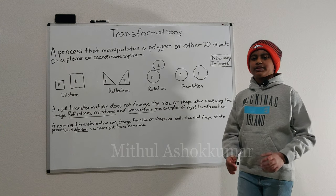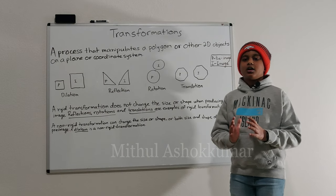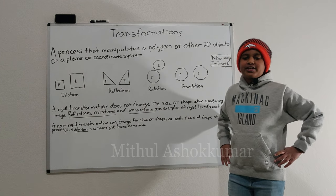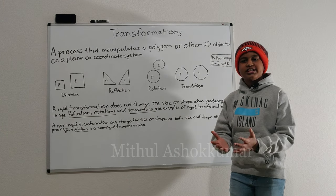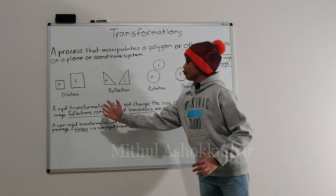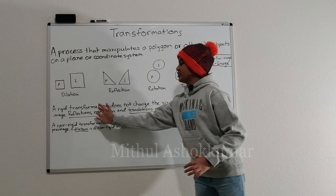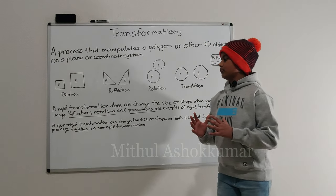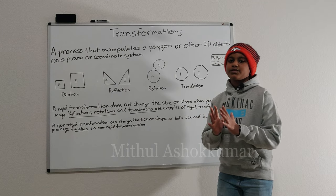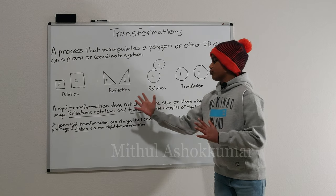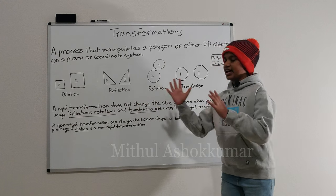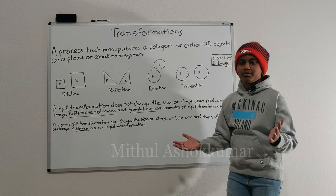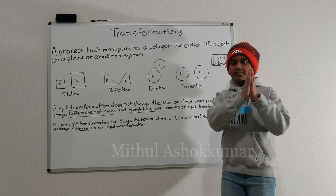There are two types of transformations in Math. They are rigid transformations and non-rigid transformations. A rigid transformation does not change the size or shape when producing the image.